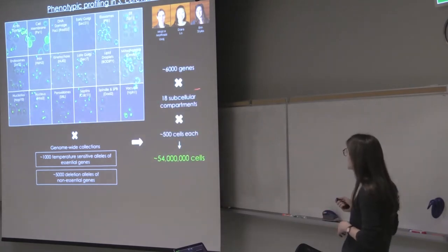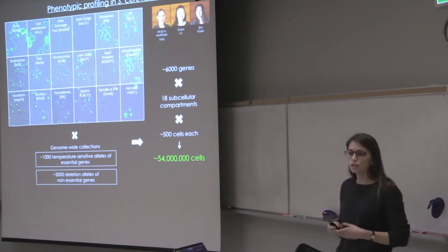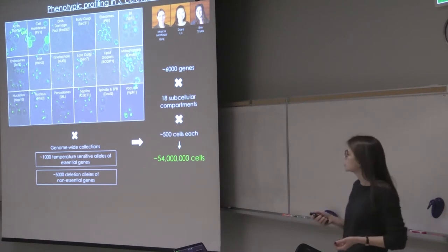So we have around 6,000 genes in yeast that we've simply deleted and we're looking at 18 different compartments. And this gives us millions of cells to analyze and we have to come up with an automatic way of detecting these mutant morphologies.